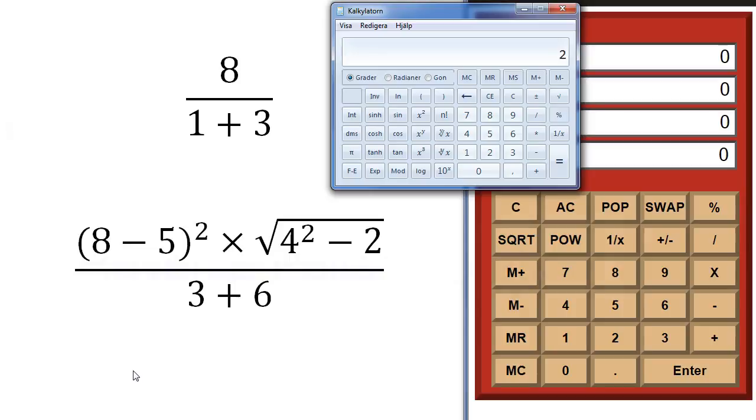RPN is a postfix notation as opposed to the algebraic way of entering numbers which is an infix notation. Infix means that you put the operator, that's for example the plus or minus sign, between the operands, the things that you want to add or subtract, like in this case for example 1 plus 3.